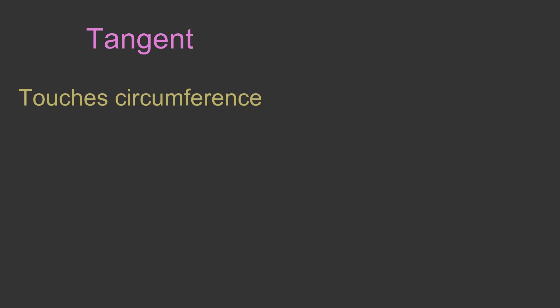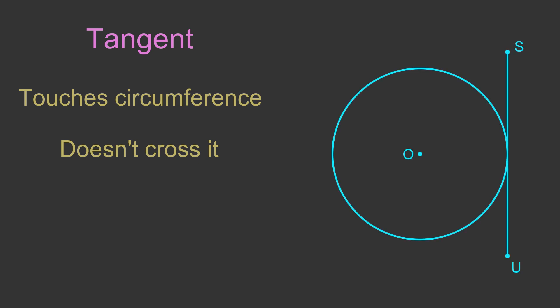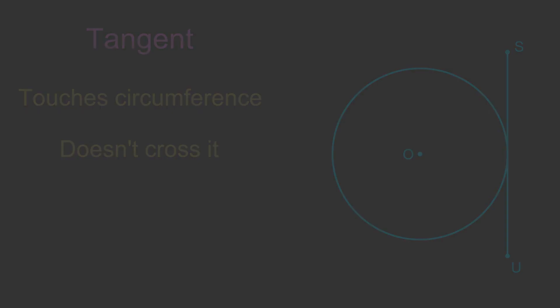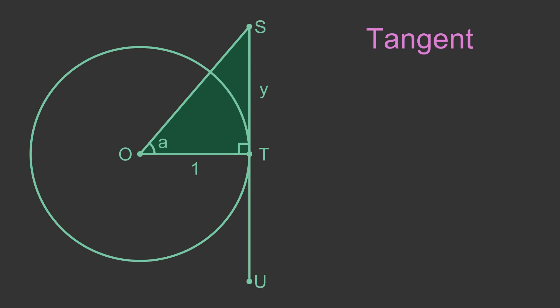As you might expect, the tangent function relates to the tangent of a circle. A tangent to a circle is a line that touches the circumference of the circle without crossing it. In this example the line SU is a tangent to the circle. Once again we can draw a triangle in the unit circle to discover how the tangent function relates to the tangent of a circle.